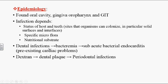Dental infections and dental therapies can allow this organism to enter the bloodstream, leading to bacteremia. This bacteremia can lead to subacute bacterial endocarditis in people with pre-existing cardiac problems such as rheumatic fever, valvular disease, or prosthetic valves. The dextran produced by this organism helps it attach to tissues, especially tooth structures, forming a biofilm that promotes colony growth and ultimately creates a dental plaque, stimulating periodontal infections and loosening of teeth.